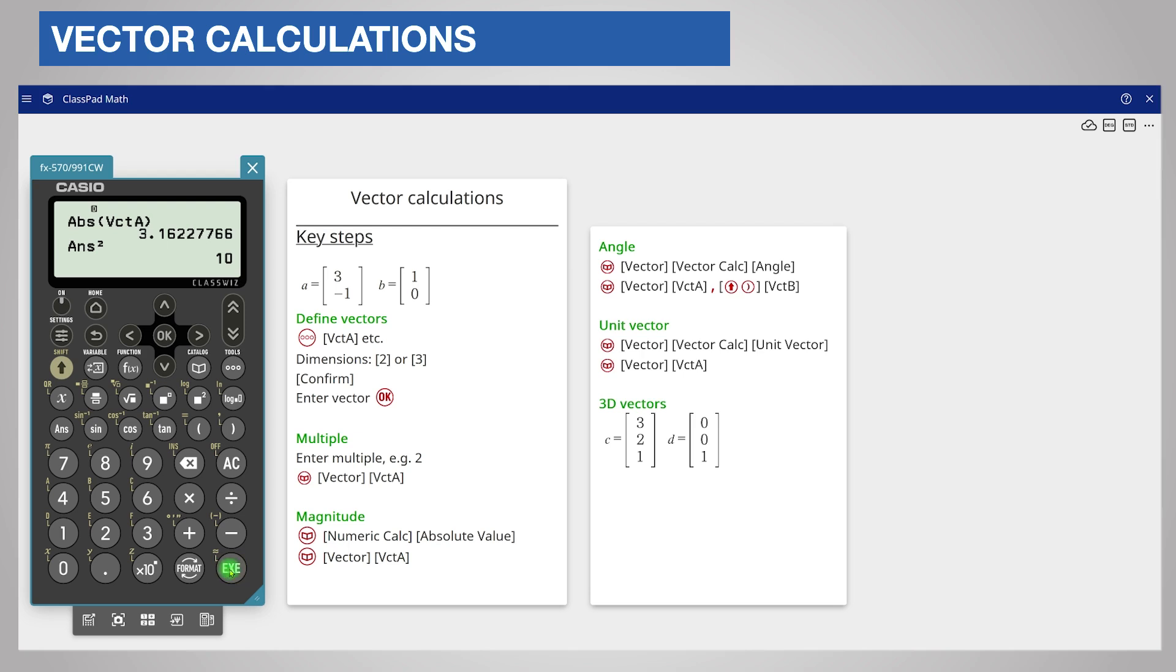You can also find the angle between a vector and an axis. For example, the angle between vector A and the positive x-axis is the angle between vector A and the direction vector [1, 0]. Enter the vector [1, 0] using the tools key as before.